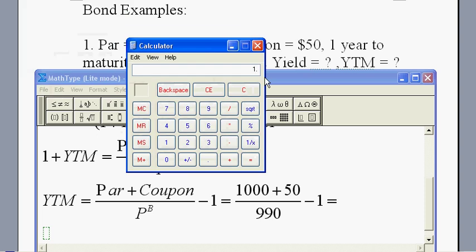It is 1050 divided by 990. We got 1.060606. That's not really an interest rate, so that's why we need to minus 1 here.